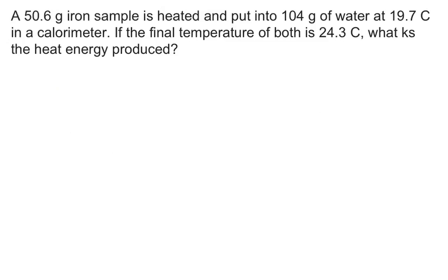Let's look at a calorimetry problem. A 50.6 gram iron sample is heated and put into 104 grams of water at 19.7 degrees Celsius in a calorimeter. If the final temperature of both is 24.3 Celsius, what is the heat energy produced? This problem at first appears to contain way too much information. Let's sort it out. We have iron, we have water. All we want to know is the heat energy produced, which means we only need enough information on one of these two to run this equation for Q.